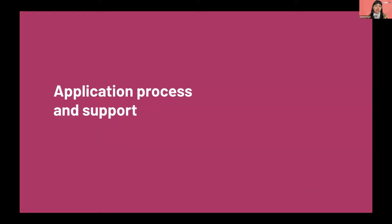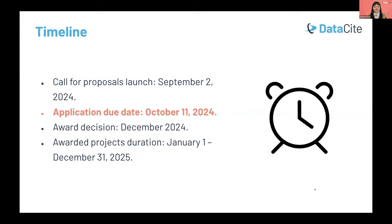Now I'm going to share how to apply for the fund and what kind of support you can receive. The timeline is very important. We launched the call for proposals on September 2nd and the last day to submit applications is October 11th. After that, we'll send applications for external review, and we hope that by December we will be able to send award notifications. The awarded projects will carry out their projects from January 1st to December 31st, 2025.